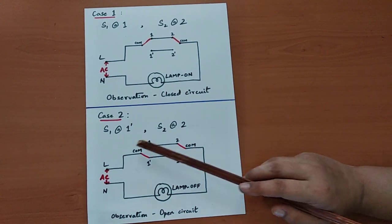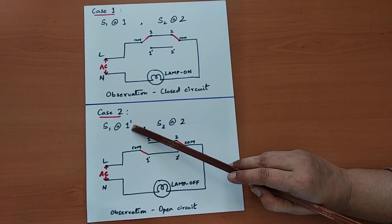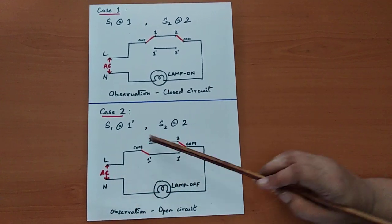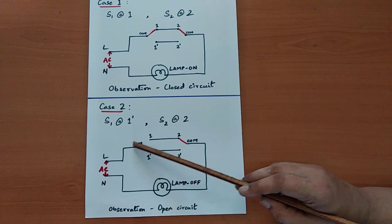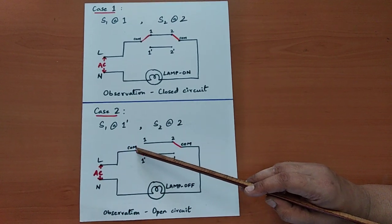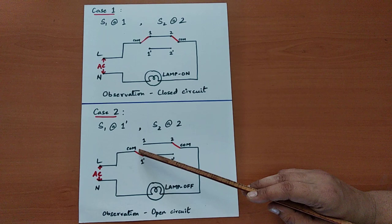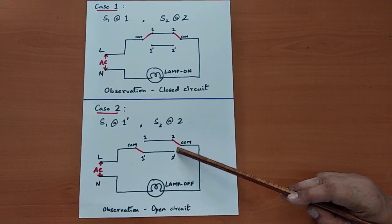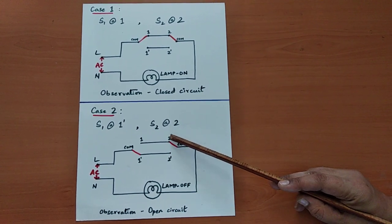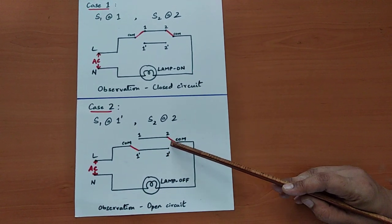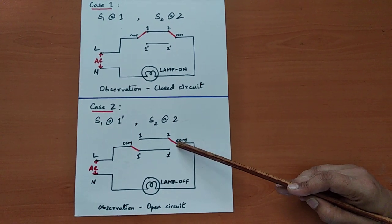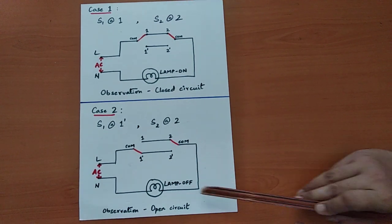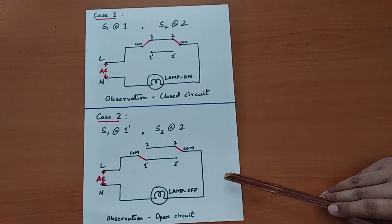In case 2, when switch S1 is moved to the 1 dash position and S2 is retained at 2, the current enters the common terminal and then enters 1 dash because switch S1 is connected at 1 dash. Now the current does not have a path to flow because switch S2 is at 2, not 2 dash. Hence this becomes an open circuit, and since current does not flow in an open circuit, the lamp did not glow.